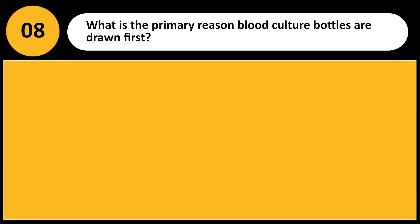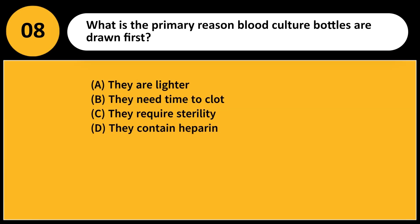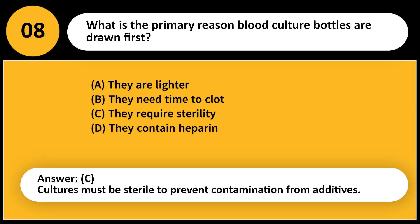What is the primary reason blood culture bottles are drawn first? A. They are lighter. B. They need time to clot. C. They require sterility. D. They contain heparin. Answer: C. Cultures must be sterile to prevent contamination from additives.